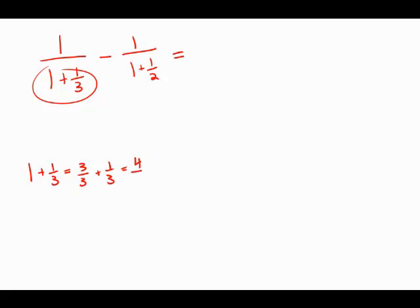Now I'm going to try and simplify this denominator. One plus one-half. That would be two-halves plus one-half equals three-halves.